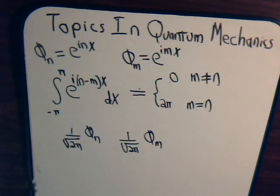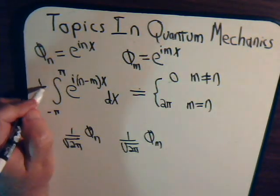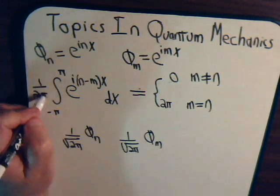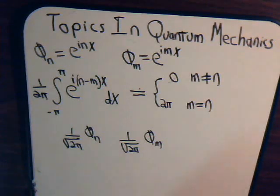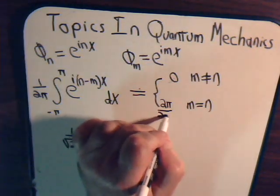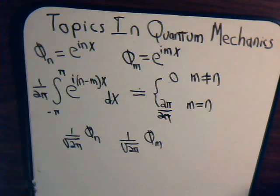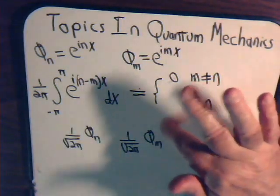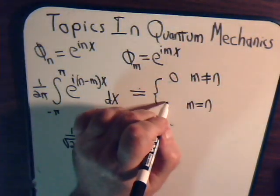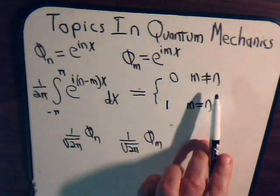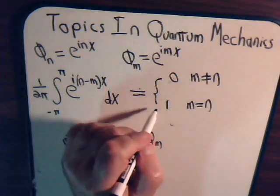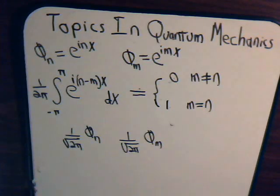Now we have two orthonormal functions because now we multiply them together, we have one over two pi that's out here. So when we integrate, we're going to have two pi divided by two pi, which is one. So their inner product is either zero when m does not equal n, or it equals one when m equals n. So here we have two orthonormal functions.